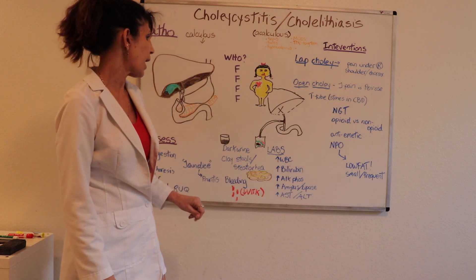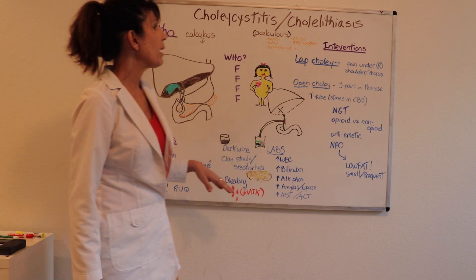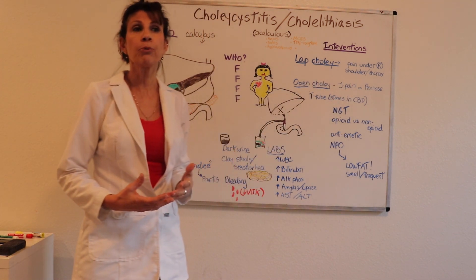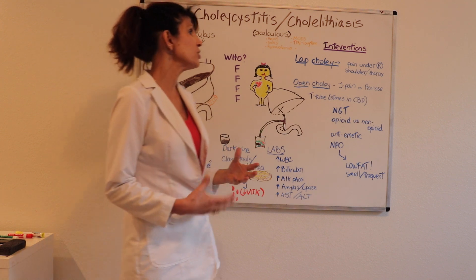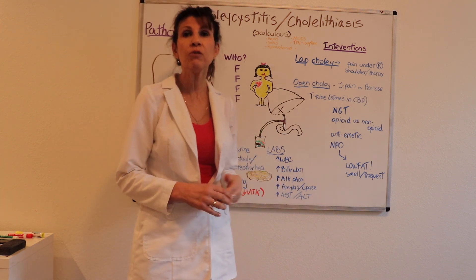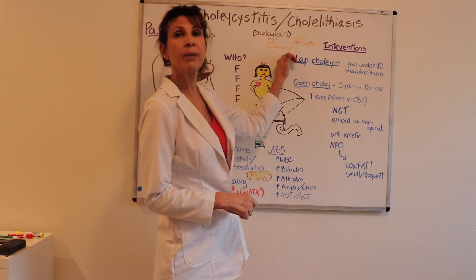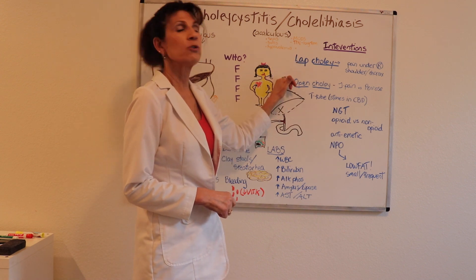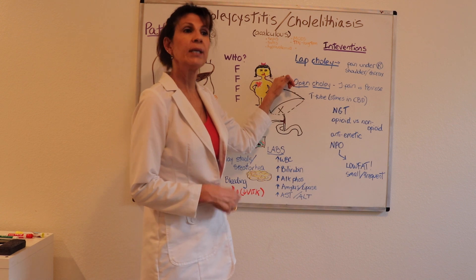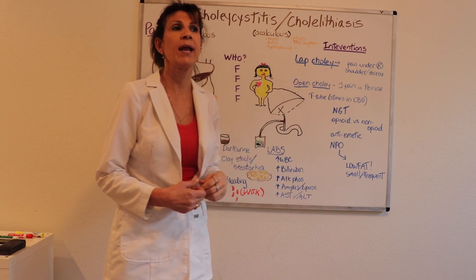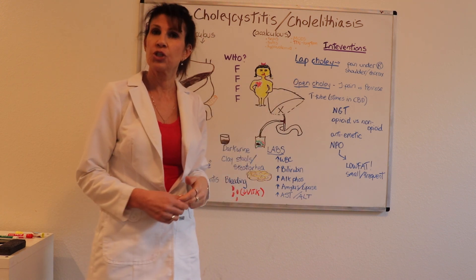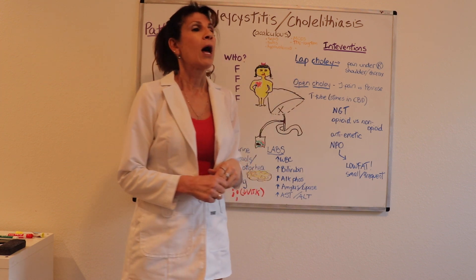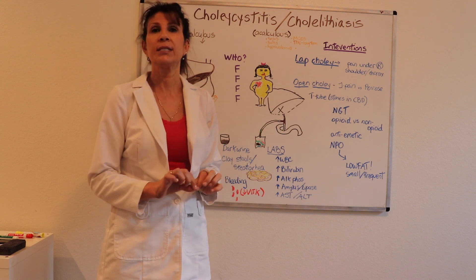For treatment, there are two surgical approaches to removing the gallbladder: the laparoscopic cholecystectomy — also called lap chole — and the open cholecystectomy, which is a more serious surgical procedure. The laparoscopic approach is associated with much less downtime and much less wound healing time, because the incisions are tiny.